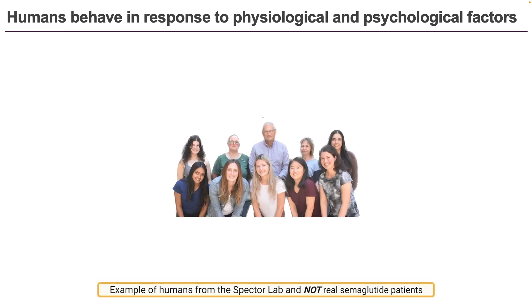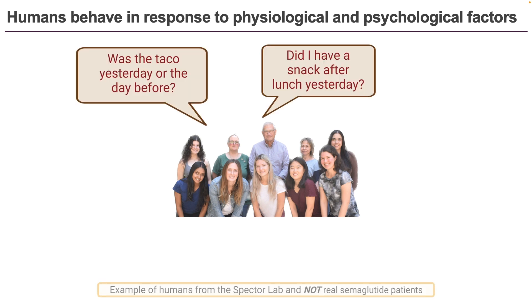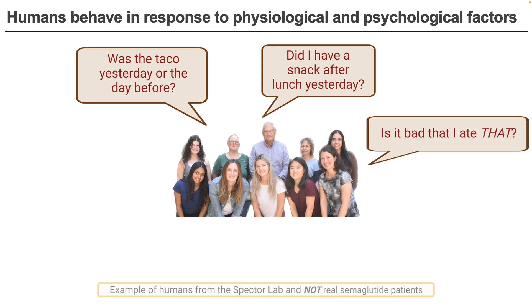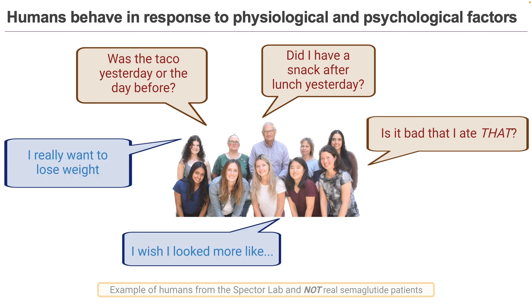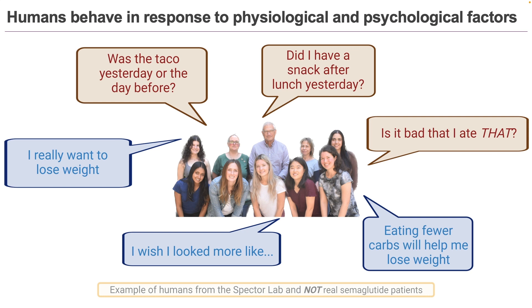To answer that question, you could ask people on semaglutide about their eating, but then you'd be relying on memory and self-report. And even if people had perfect memories, would they really tell you everything that they ate? And if you found results, how would you know if they were the physiological effects of the drug or psychological effects from the desire to lose weight or look a certain way, or were influenced by a lifetime of conflicting nutritional advice? Setting up an experiment to study food intake in humans that doesn't rely on memory or self-report is extremely expensive, and finding subjects who aren't responding to these psychological factors is probably impossible.